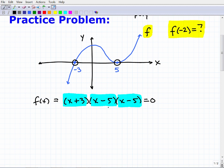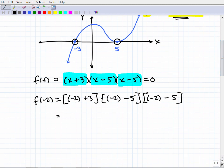This is just the factored form of this function, so can I just find f of negative 2 right here? Yes, you sure can. All I have to do is replace x with negative 2. I'll use brackets: negative 2 plus 3 times negative 2 minus 5 times negative 2 minus 5. I'm using brackets so I can use different types of grouping symbols.